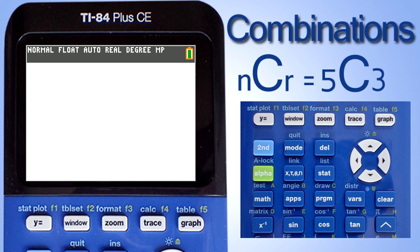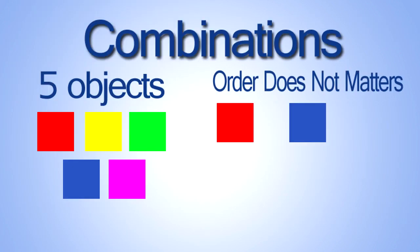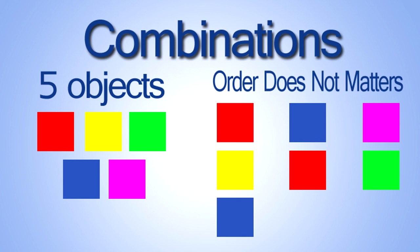Hi, this is Rob. I'm going to show you how to do combinations on the TI-84 Plus CE graphing calculator. A combination is an arrangement of objects in which the order does not matter.